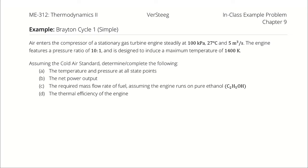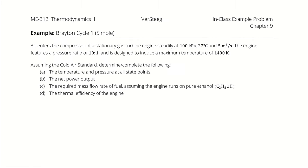Air enters the compressor of a stationary gas turbine engine steadily at 100 kilopascals, 27 degrees Celsius, and 5 cubic meters per second. The engine features a pressure ratio of 10 to 1 and is designed to induce a maximum temperature of 1400 kelvin. Assuming the cold air standard, determine the temperature and pressure at all state points, the net power output, the required mass flow rate of fuel assuming the engine runs on pure ethanol, and the thermal efficiency of the engine.